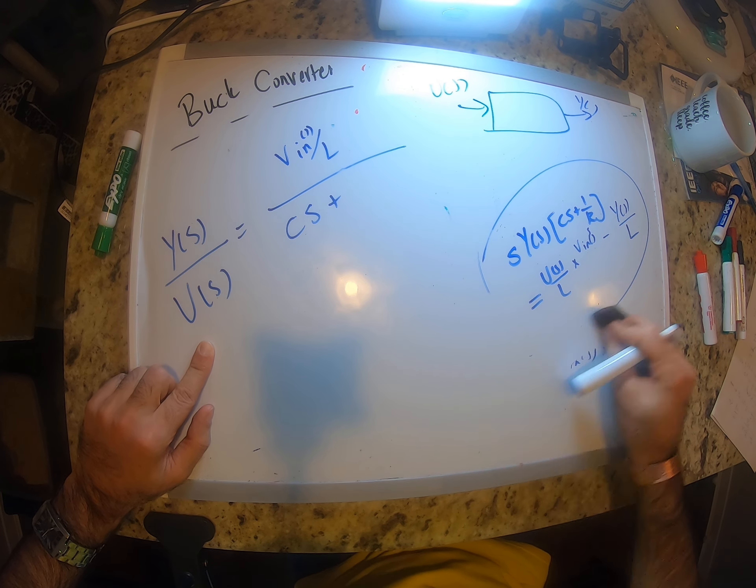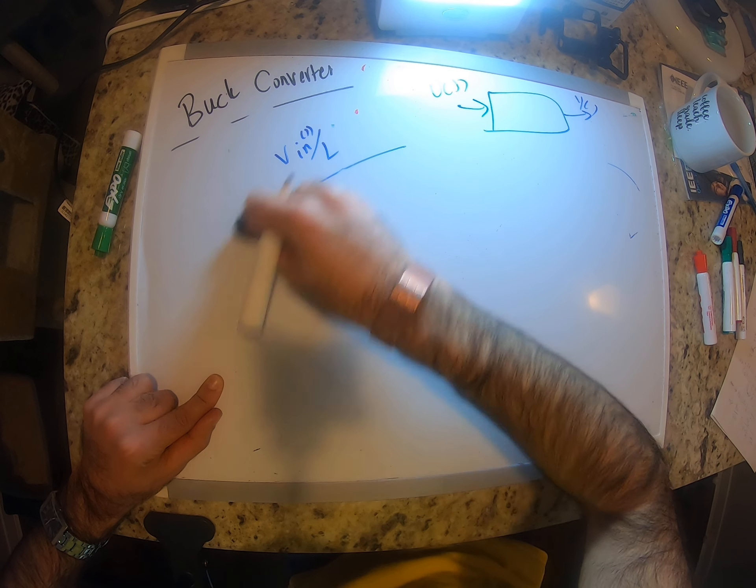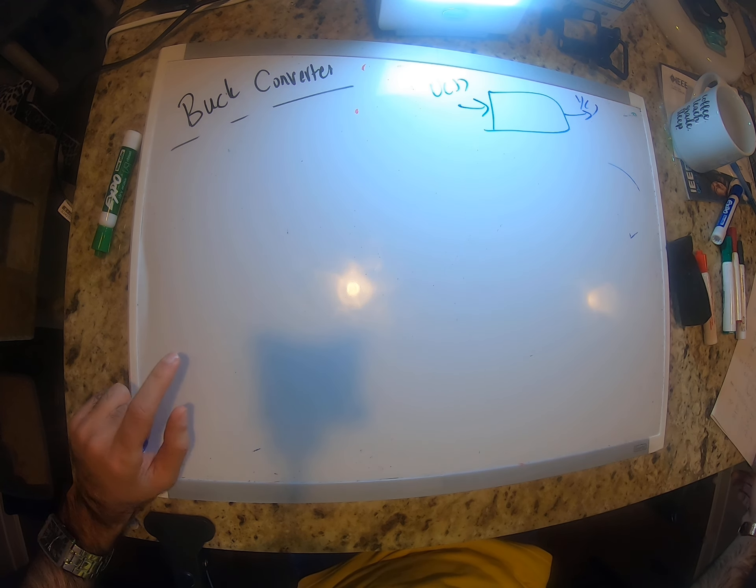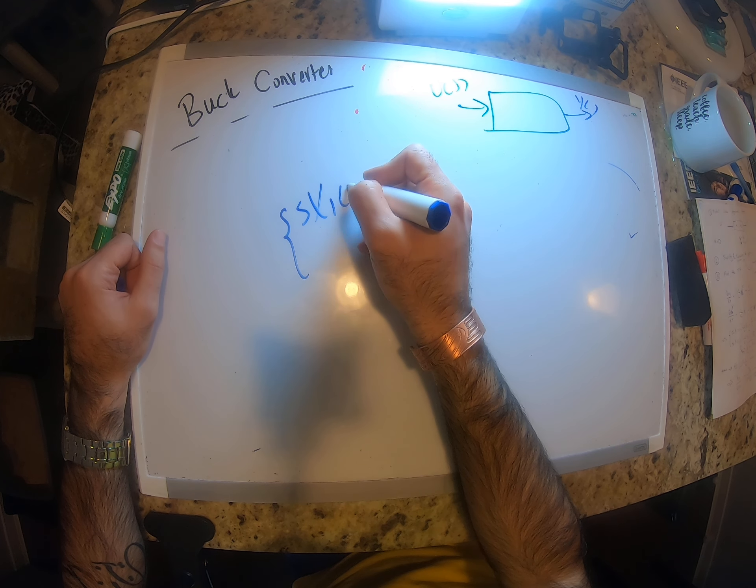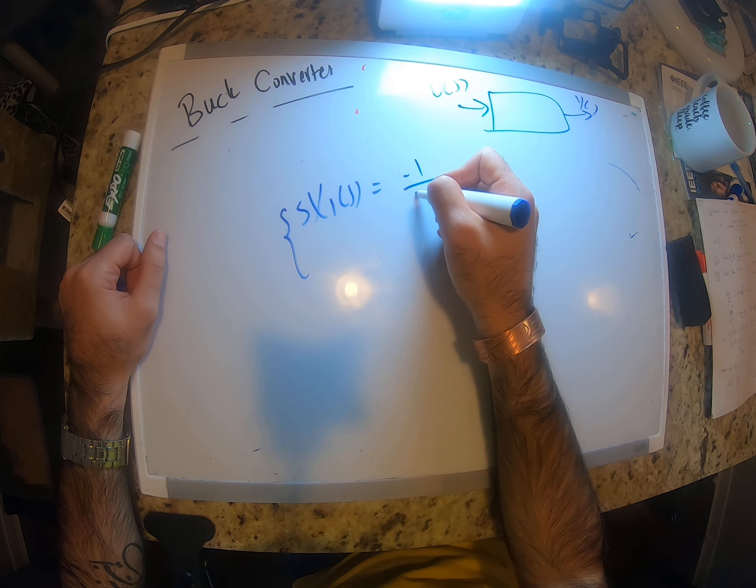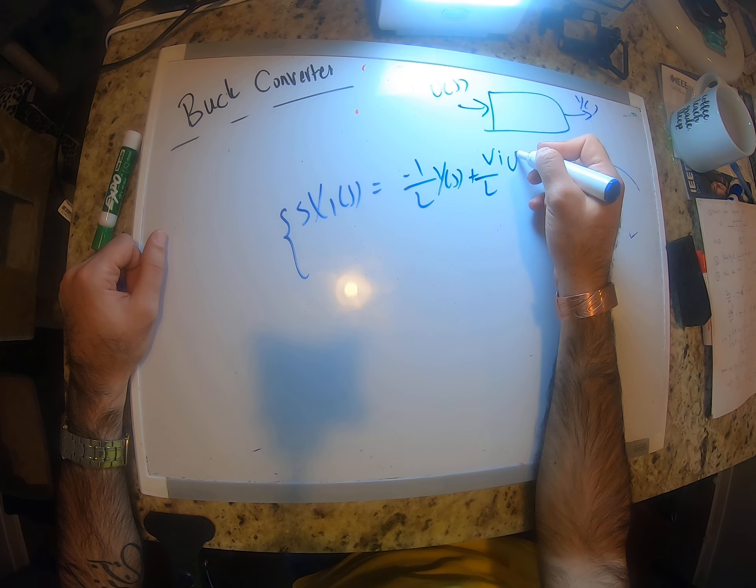Let me do this one more time very quickly. I'm just going to write down from my notes. s(x1)(s) equals negative 1 over L y(s) plus Vi over L u(s).